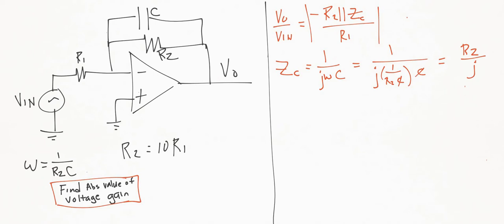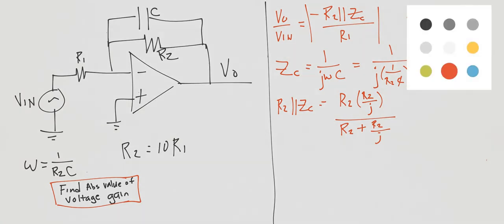Next we can find this parallel combination of R2 and ZC. R2 in parallel with ZC—for that you can use the basic product over sum rule. So product R2 times ZC is R2 over j, and over product over sum R2 plus R2 over j. Now this is starting to get a little bit messier. At this point I like to clean up what I already have. I'm going to get rid of some of the nested fractions in here. So what I'm going to do is I'm going to multiply the bottom here by j over j.